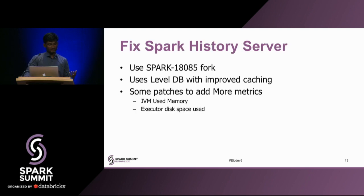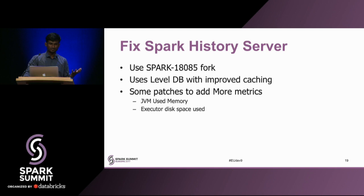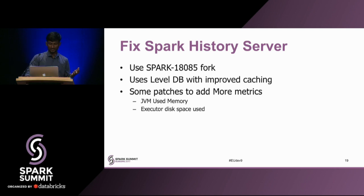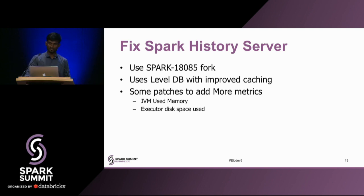Ultimately, we needed to fix the Spark history server itself. There's an upstream umbrella ticket that addresses a lot of history server problems — it basically uses LevelDB with improved caching. We took that fork, made some small patch fixes, and deployed it, and this has been quite stable for us. In addition, we added a couple of metrics that we found missing in the history server, like JVM used memory and the executor peak memory. Once we had this stable version of the history server, we just had to write a metrics fetcher that makes REST calls to get all the metrics we want.